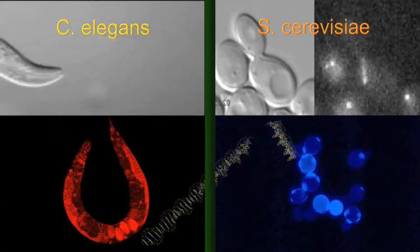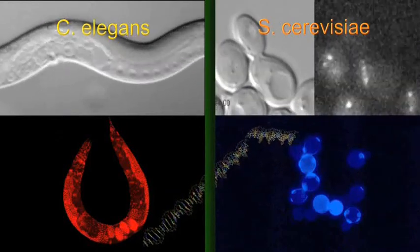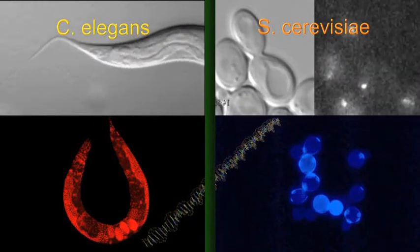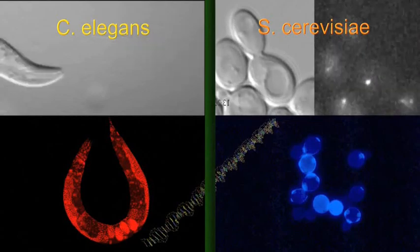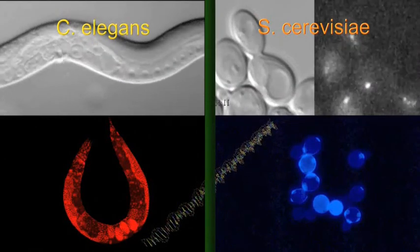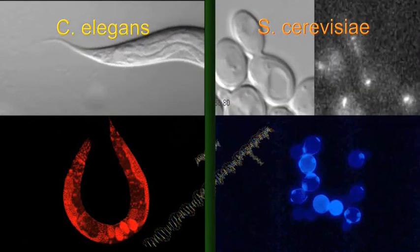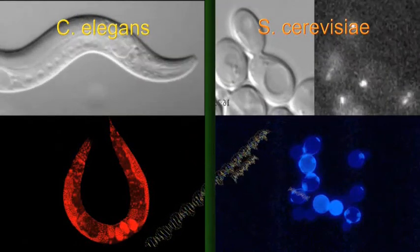Since the worm is a more modern creature than the yeast, the worm genes that deal with multicellularity are certainly absent from the yeast. But more than that, these extra genes are directly derived from the primitive genes that provide core cellular function.